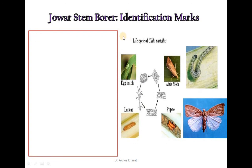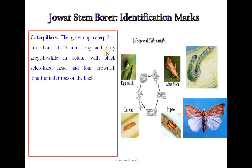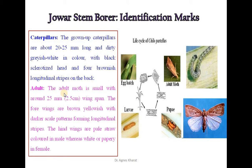For identification of jawar stem borer, the first stage we can identify is the caterpillar. The grown-up caterpillars are about 20 to 25 mm long and dirty grayish white in color with a black sclerotized head and 4 brownish longitudinal strips on the back.